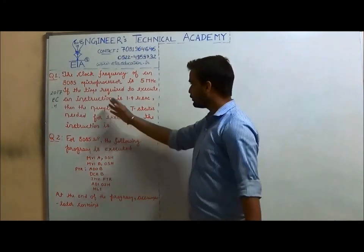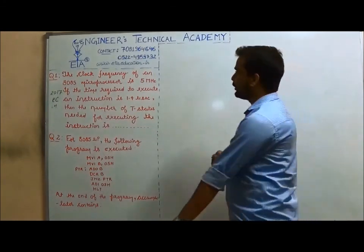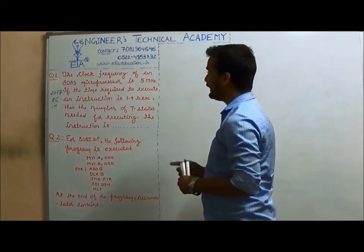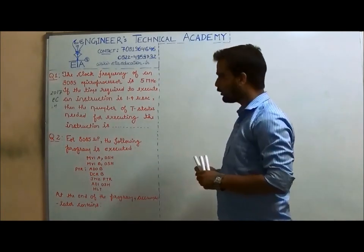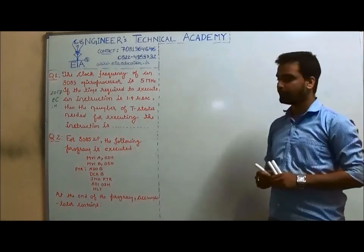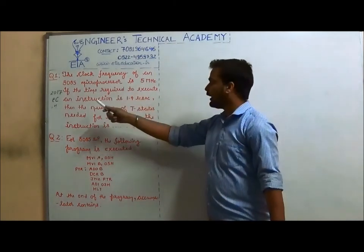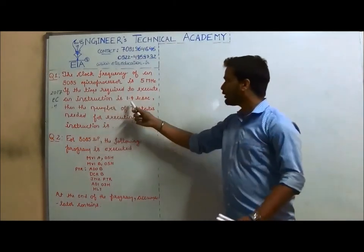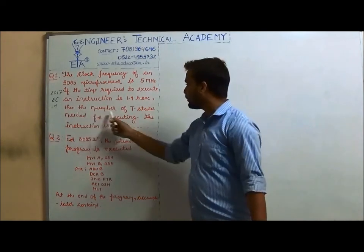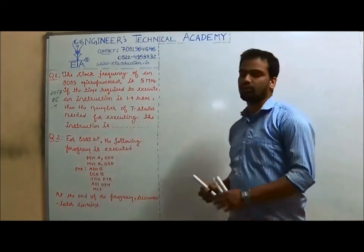We will be solving the second question first. The question says: the clock frequency of an 8085 microprocessor is 5 MHz. If the time required to execute an instruction is 1.4 microseconds, then the number of T-states needed for executing the instruction is?